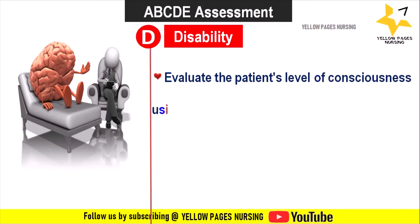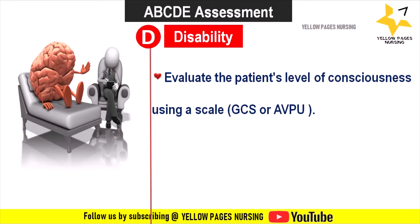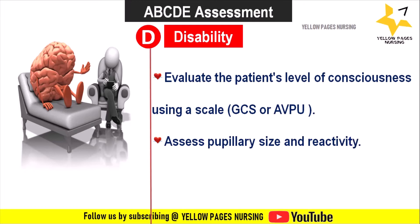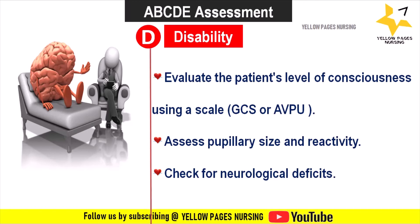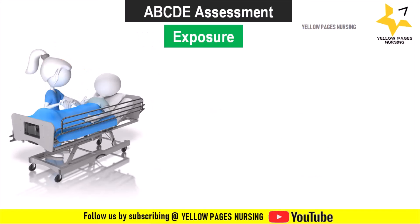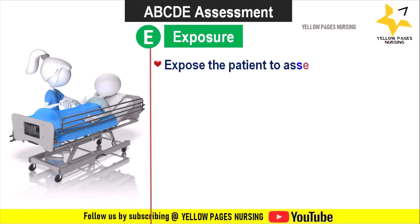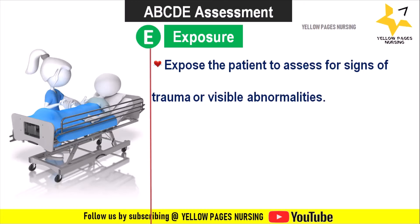Disability: evaluate the patient's level of consciousness using a scale such as GCS or AVPU — that is Alert, Verbal, Painful, and Unresponsive scale. Assess pupillary size and reactivity, and check for neurological deficits.